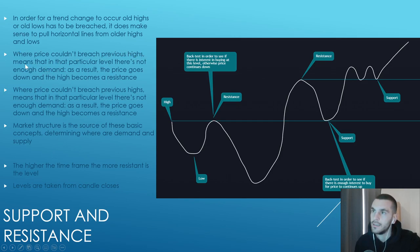Where price couldn't breach previous highs means that at that particular level there is not enough demand. As a result, price goes down and the high becomes a resistance. Market structure is the source of these basic concepts determining where are demand and supply. The higher the timeframe, the stronger the level is.